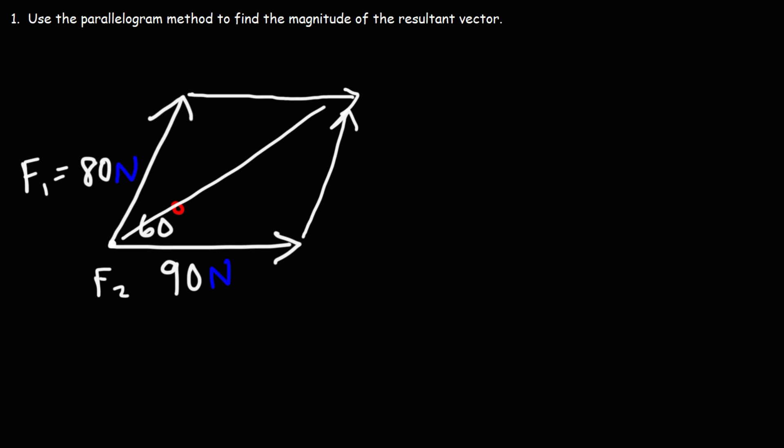So I'm going to redraw that. So this is the F2 vector. This is the new version of the F1 vector. And this is going to be the resultant vector. We'll call it FR.